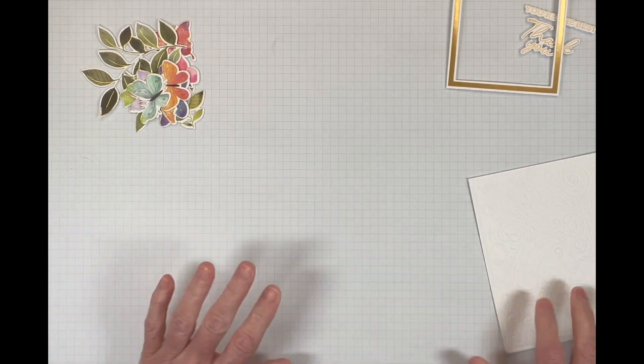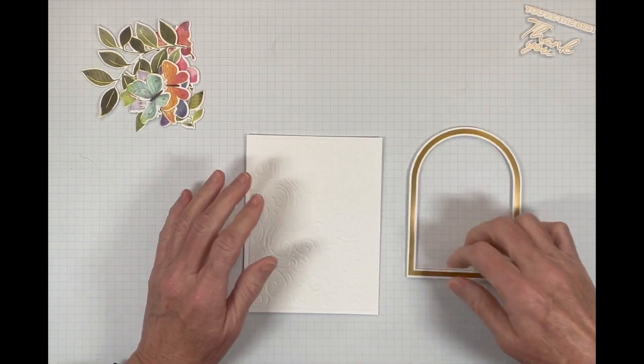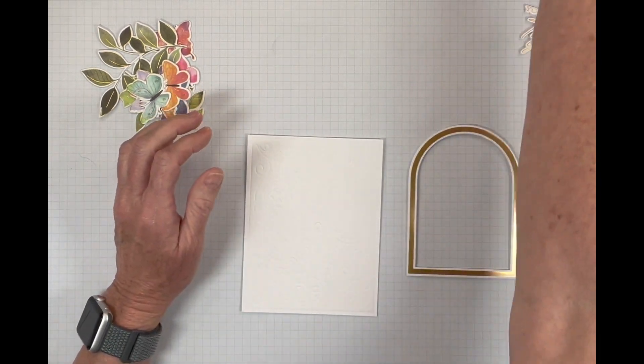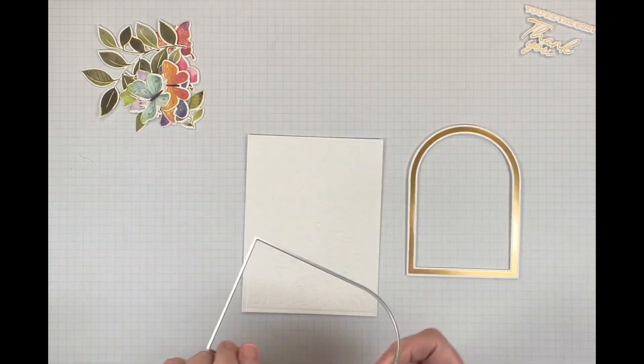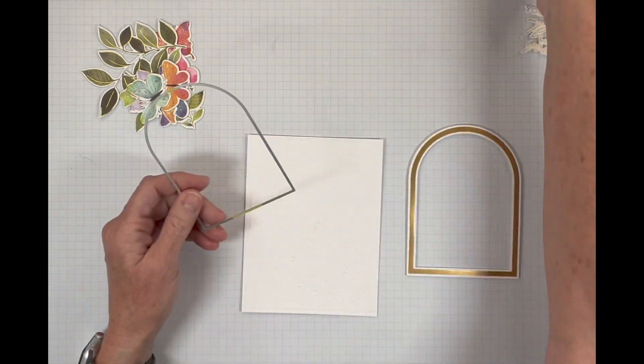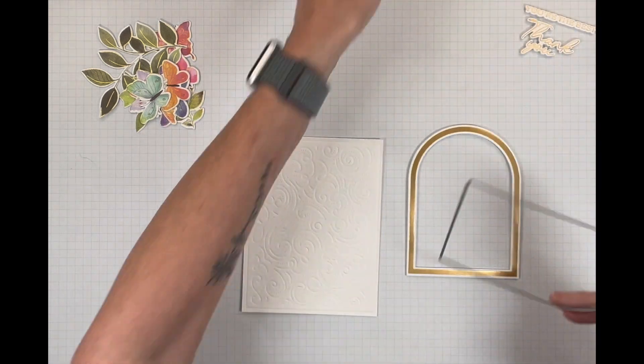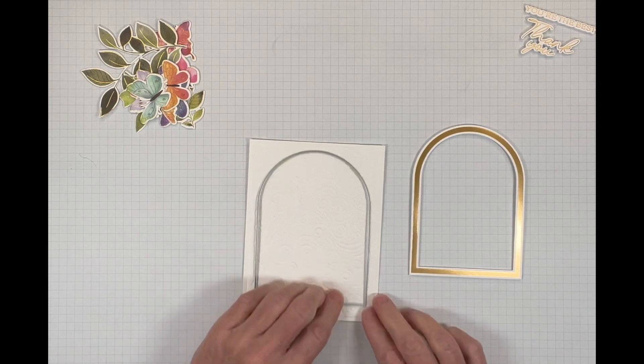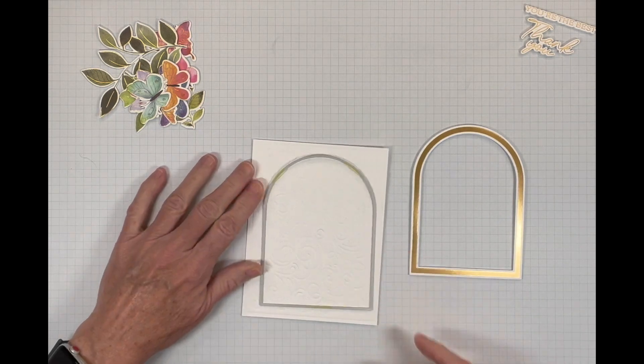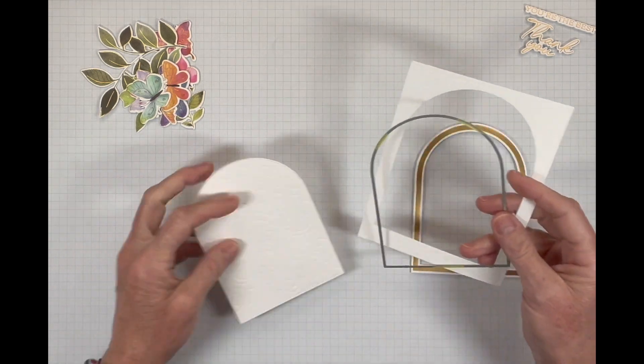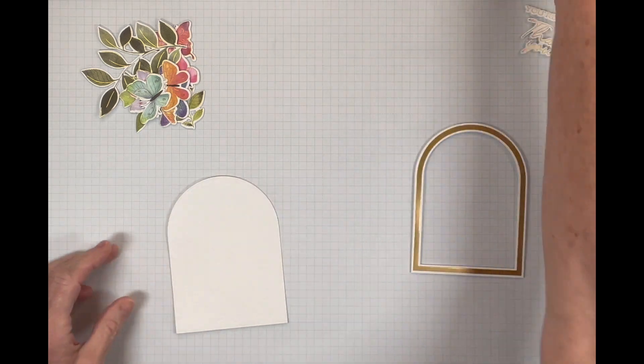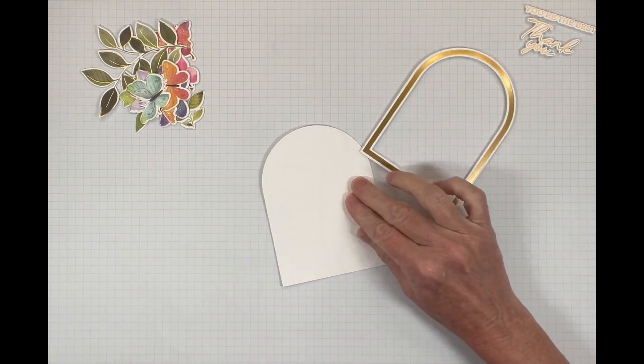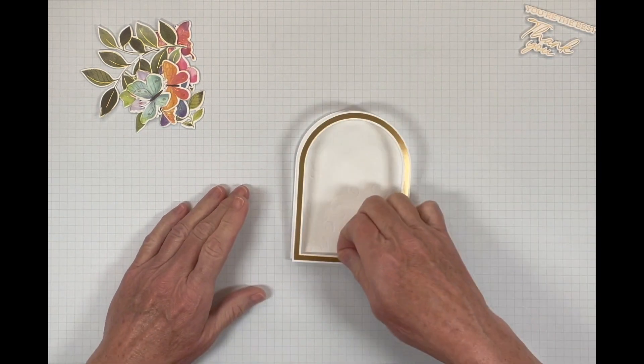And in order to cut this out, I am going to use the largest nesting die that I used here, because I want this to layer underneath my arch. So I'm going to go cut an arch out of this. I got my arch and I know it is going to fit perfectly because I used the same size.